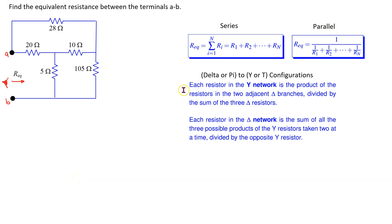In this video, we will see the correct technique of applying a wye-to-delta transformation to help find the equivalent resistance between terminals of interest. This is the circuit of interest and we are interested in finding the equivalent resistance seen looking at the terminals A and B.